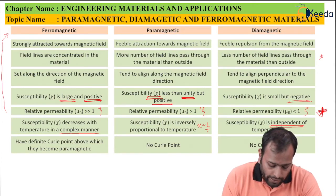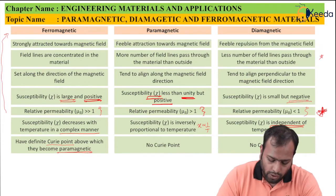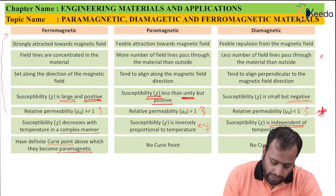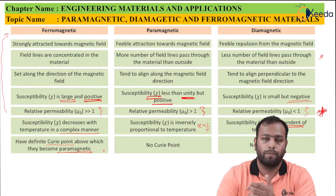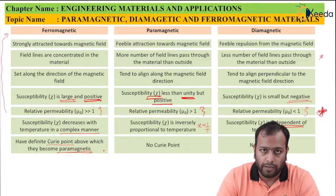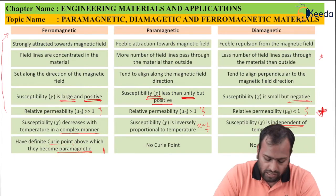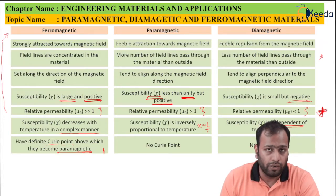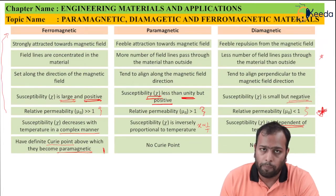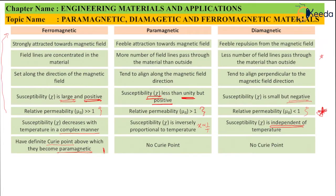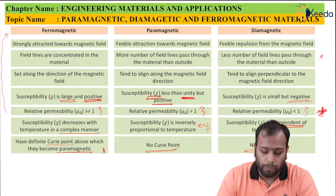For ferromagnetic materials, there is a definite Curie point above which they become paramagnetic. Crossing this Curie point, ferromagnetic materials lose their properties and start showing paramagnetic behavior. However, in paramagnetic and diamagnetic materials, there is no such Curie point.